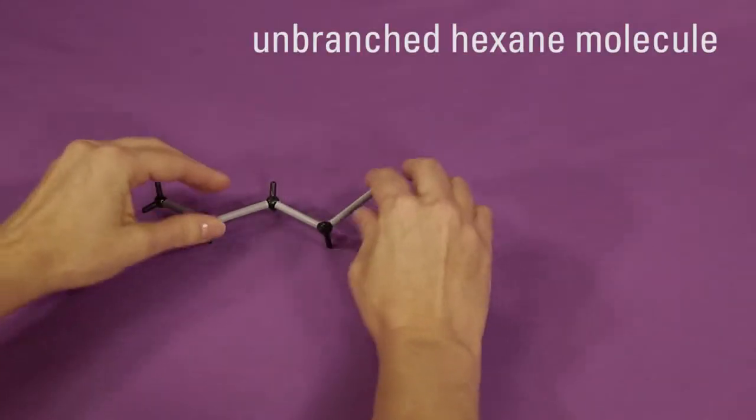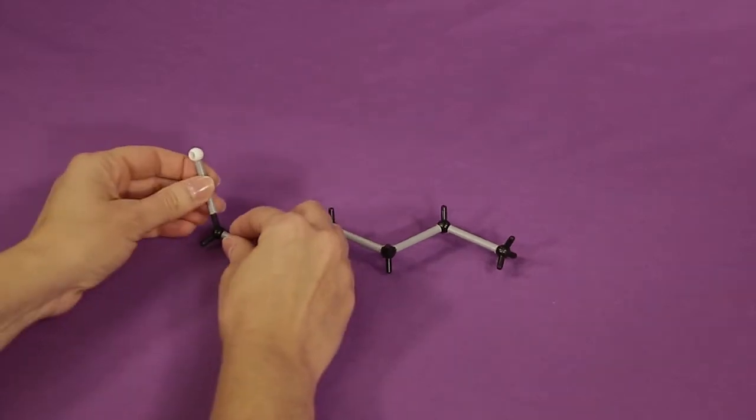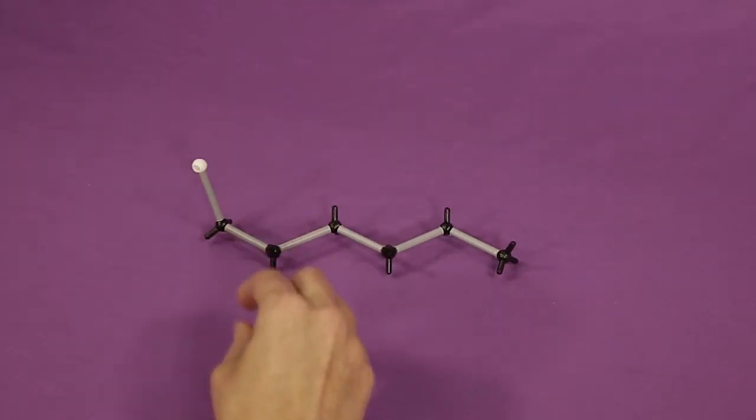This is an unbranched hexane molecule. Complete this model by adding a single bond and a hydrogen to each available bond.